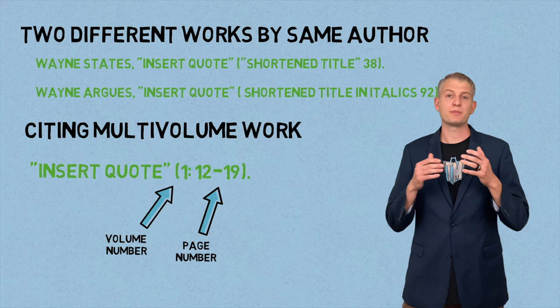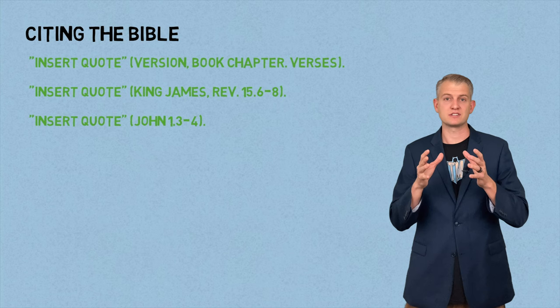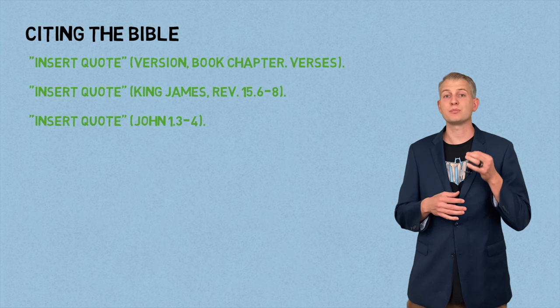Here's what you do if you're citing the Bible or another religious text. After the quote, in the parentheses, have the version, comma, book, chapter, period, and then the verses. Notice in the example the book name is abbreviated. Further in your writing, if you're citing another passage from the Bible, you do not need to include the version in the parenthetical citation.